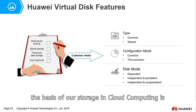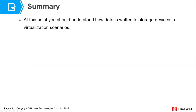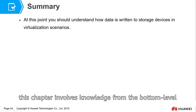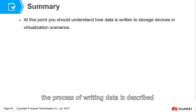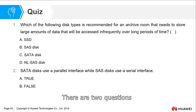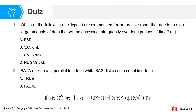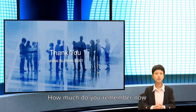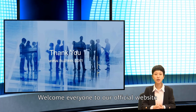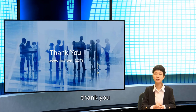At this point, the basics of storage in cloud computing are complete. To summarize, this chapter involves knowledge from the bottom-level physical disk to the top-level virtual disk, and describes the overall process of writing data. There are two review questions: one about the type of physical disk, and the other is a true or false question. Welcome everyone to our official website to leave comments. The content of this lecture is over. Thank you.